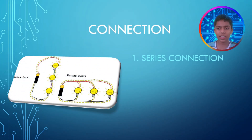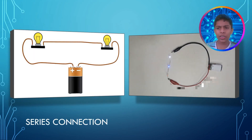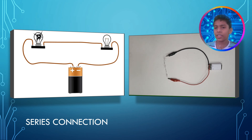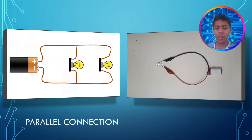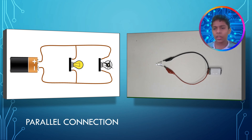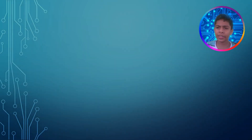The first one is serial connection and the second one is parallel connection. There are benefits and drawbacks in serial connections. The drawback is that in a serial connection, if one part of the circuit is broken, the whole circuit is broken. But in a parallel connection, if one part of the circuit is broken, the other parts are still working well.